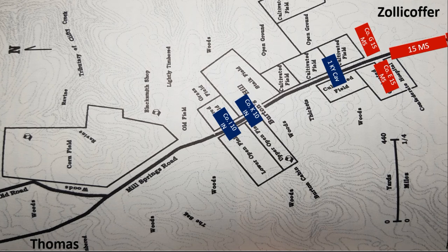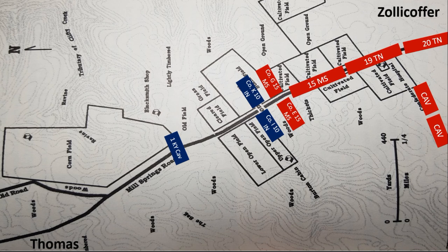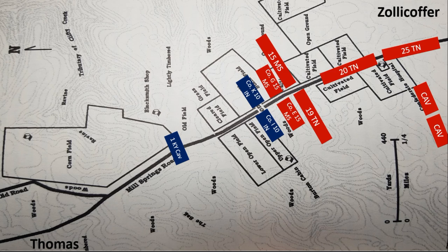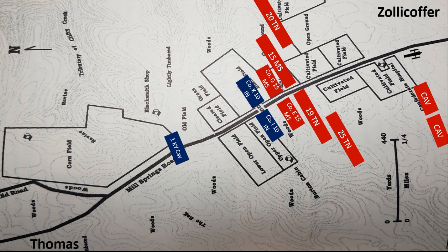The skirmishers pushed back the Union counterparts to the main Federal line. At that point, Zollicoffer deployed the 19th Tennessee to the left of the road and the rest of the 15th Mississippi to the right. The cold rain and sleet crashed into the faces of both blue and gray clad troops, slowing down reinforcements to each respective side. Following Crittenden's orders, Zollicoffer moved his men into battle quickly to land a quick attack. He placed the 20th Tennessee behind and to the right of the 15th Mississippi and the 25th Tennessee to the left and behind the 19th Tennessee. The Confederates by this point had successfully overwhelmed the Union through numbers and speed.